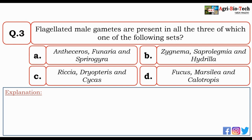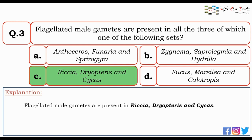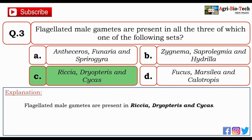Next question: flagellated male gametes are present in all three of which one of the following sets? Options include Ricksella and Cycas, Antiseros Funeria and Spirogaera, Ricksella Dryopteris and Cycas, and Fucus Marsilia and Callotropis. The correct option is C — Ricksella, Dryopteris, and Cycas. Flagellated male gametes are present in Rixia, Dryopteris, and Cycas.